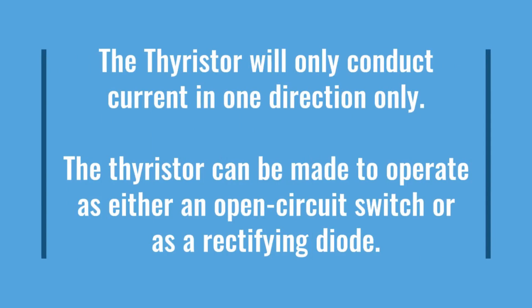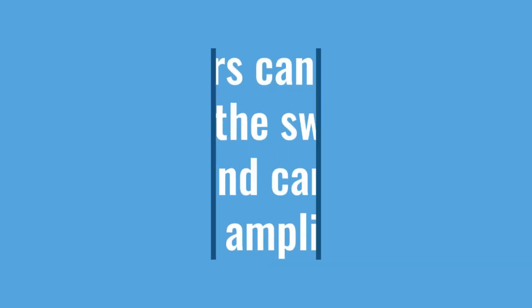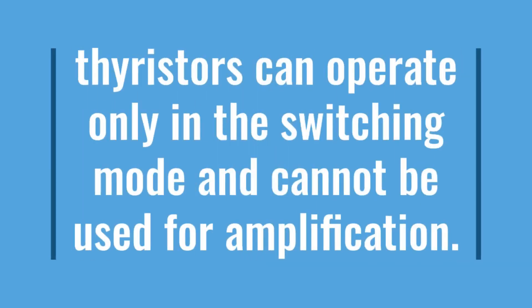Unlike a diode, the thyristor can be made to operate as either an open circuit switch or as a rectifying diode, depending upon how the thyristor's gate is triggered. In other words, thyristors can operate only in the switching mode and cannot be used for amplification.